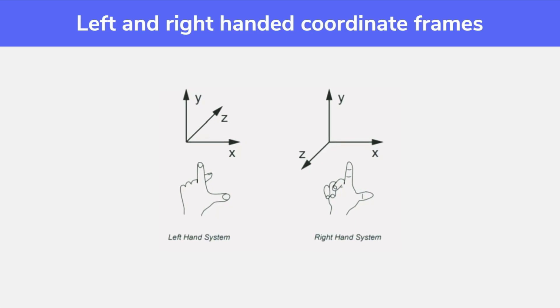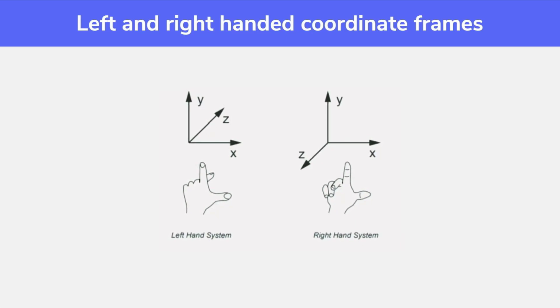Anything in space can be represented using three axes: x-axis, y-axis, and z-axis.